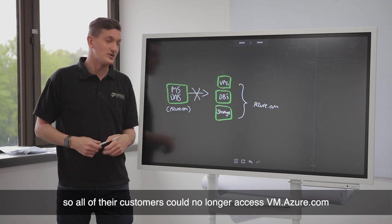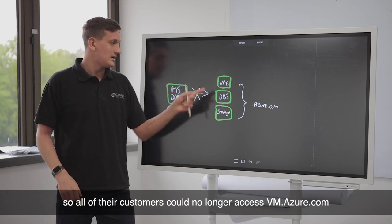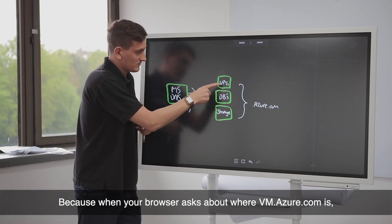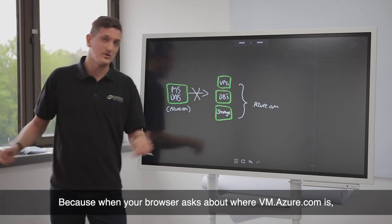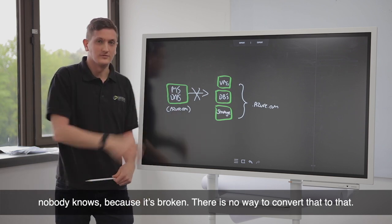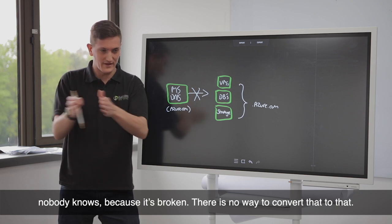So all their customers can no longer access vms.azure.com because when your browser asks where vms.azure.com is, no one knows because it's broken. There's no way to convert that to an IP address.